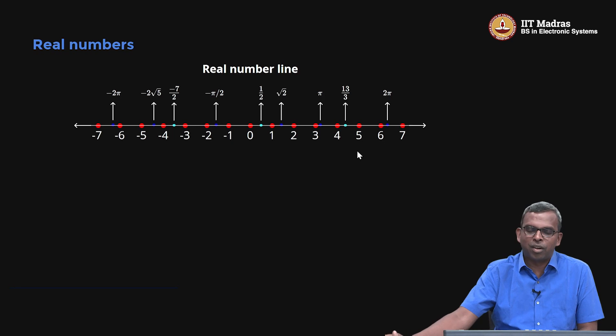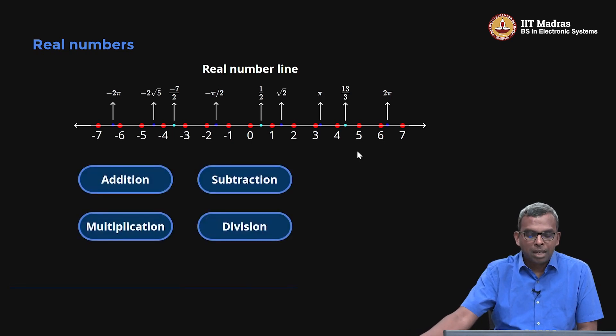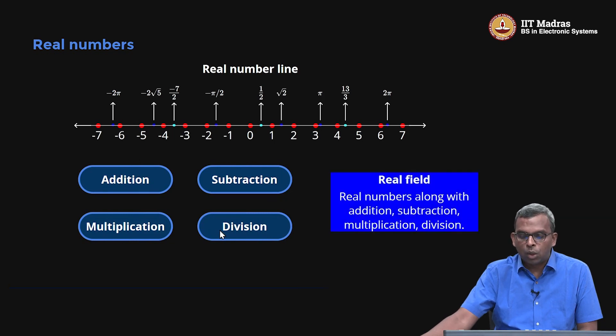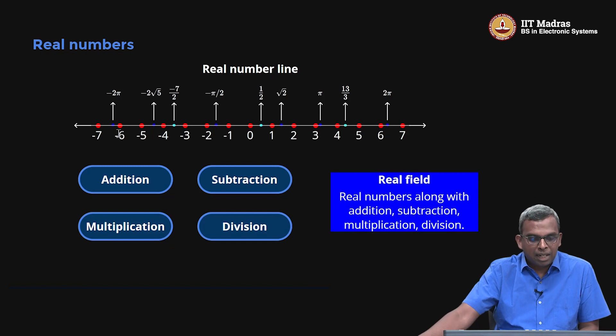In linear algebra, we'll be worried about operations you can do with real numbers: addition, subtraction, multiplication, division. It turns out the real field, as they call it, is the real numbers along with these four operations. This is called the real field.